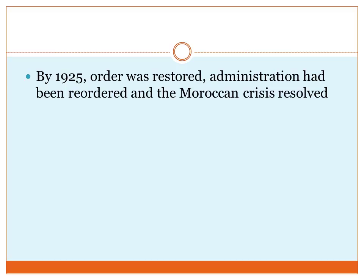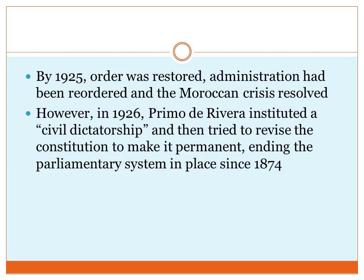Even though he had brought order to society and gotten Morocco back under Spanish control, he didn't close the parentheses — he didn't stop the authoritarian rule and bring back democracy. In 1926, he instituted something called a civil dictatorship and attempted to revise the constitution to make it permanent. The parliamentary system officially ended at this point.